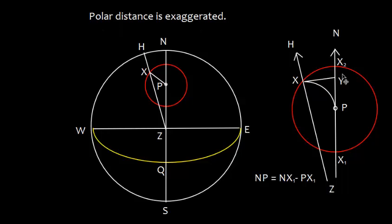Similarly, if the star is at x2, that means star is somewhere here, that means NP will be Nx2 plus Px2. So, at times, the polar distance has to be subtracted, like in this case, and at times, the polar distance has to be added.